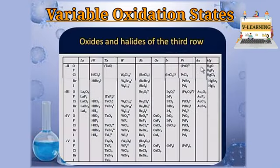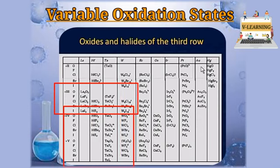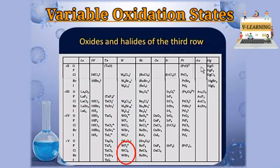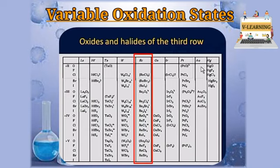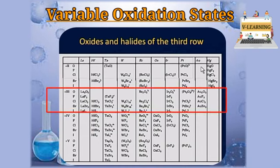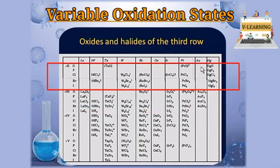Third row transition series के लिए oxides और halides का chart दिया है जो stable oxidation states विभिन्न compounds में show करता है। Tungsten +3, +4, +5 सभी में stable compounds बनाता है — WF₅ (+5 state में), tungsten tetrachloride WCl₄ (+4 state में)। Rhenium जो maximum number of oxidation states show करता है, variable compounds बना लेता है। Gold +3 में सबसे ज़्यादा halides और oxides बनाता है। Mercury +2 और +1 oxidation states में compounds बनाता है।